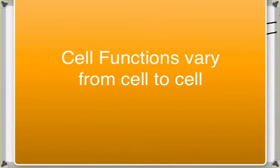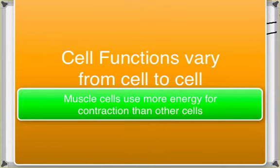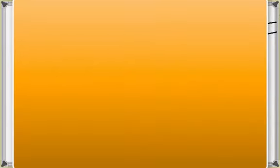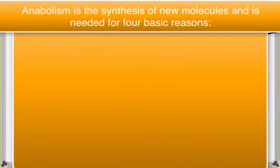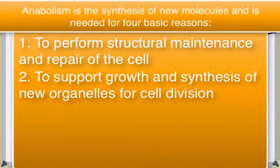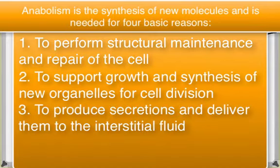Cell functions vary from cell to cell. Muscle cells use more energy for contraction, whereas gland cells need ATP to synthesize and transport their secretions. Anabolism, the synthesis of new molecules, is required for four basic reasons. Number one: to perform structural maintenance or repairs — all cells must expend energy to maintain and repair themselves, and structures must be removed and replaced regularly. Number two: to support growth — cells grow in size as they prepare to divide, synthesizing extra proteins and organelles.